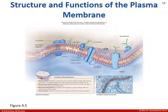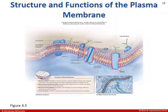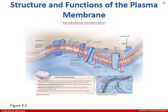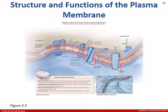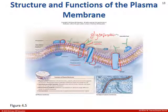You can see the integral proteins passing through the plasma membrane. The peripheral proteins just butt up to either the outside or inside of the plasma membrane. Sometimes you can have proteins tagged with carbohydrates — just like we had a lipid tagged with glucose, here we have a protein tagged with glucose, so this would be a glycoprotein.